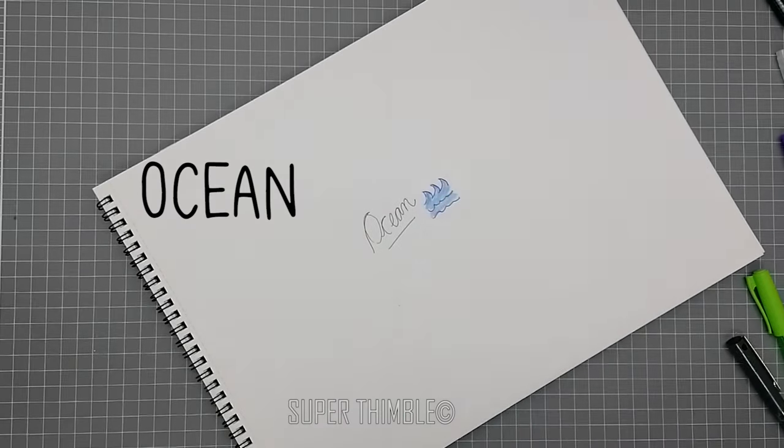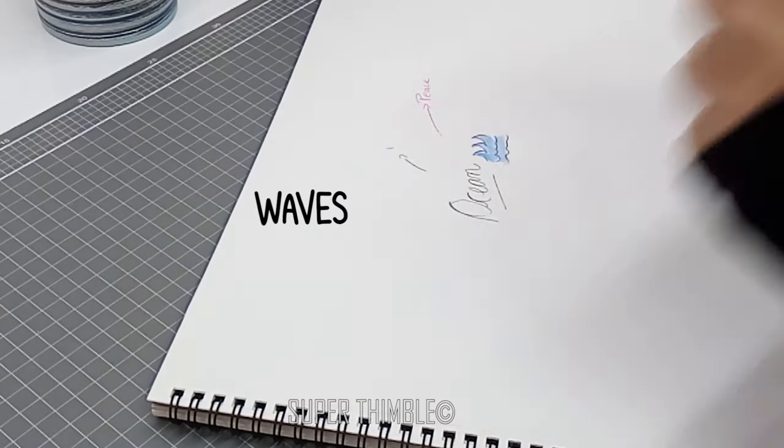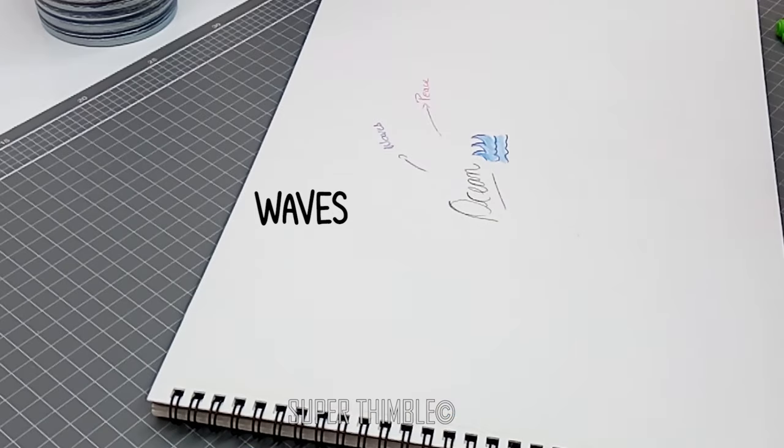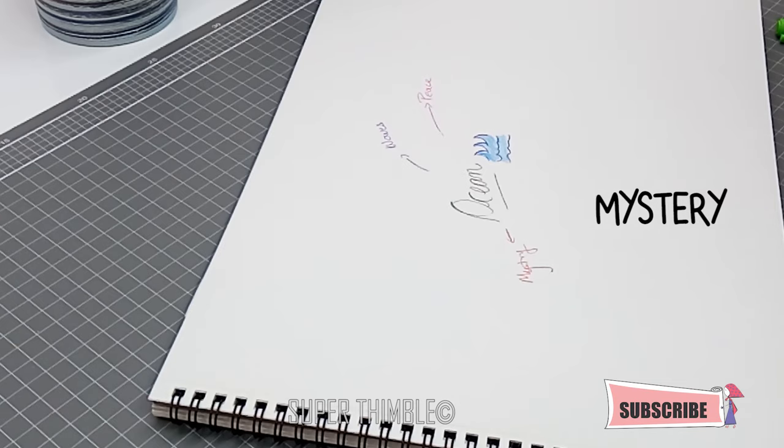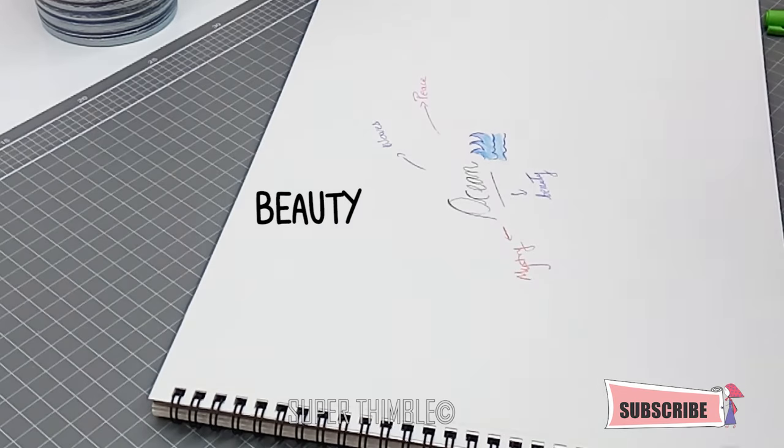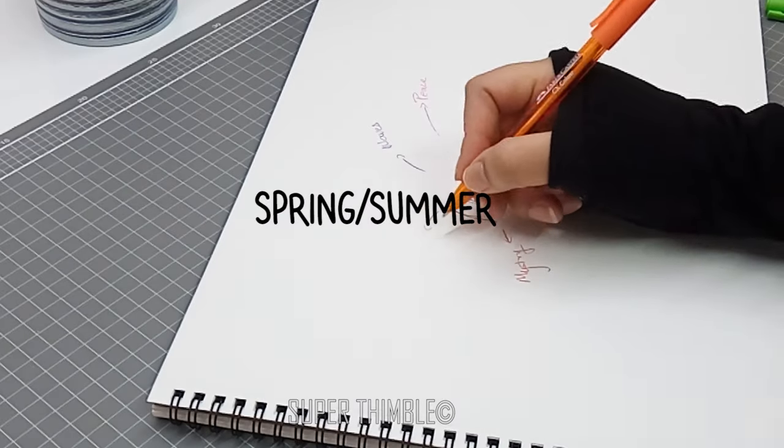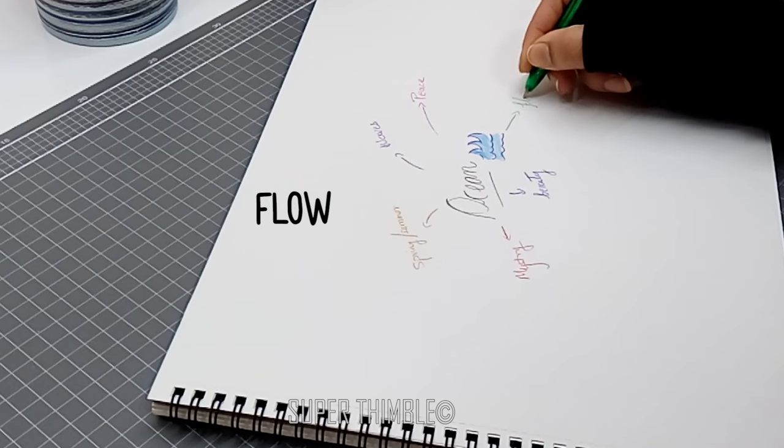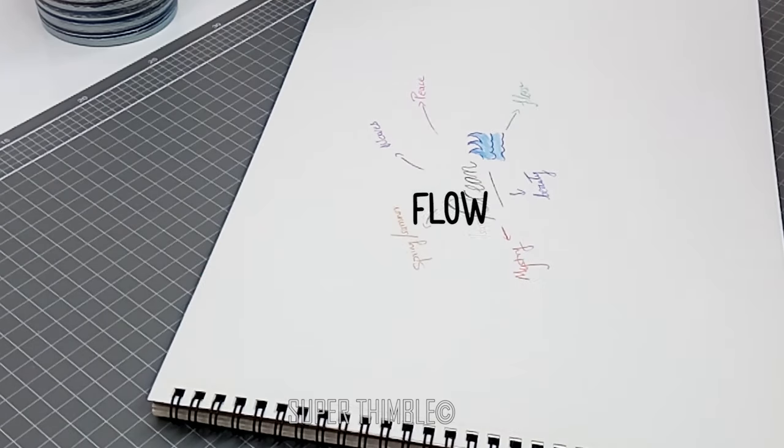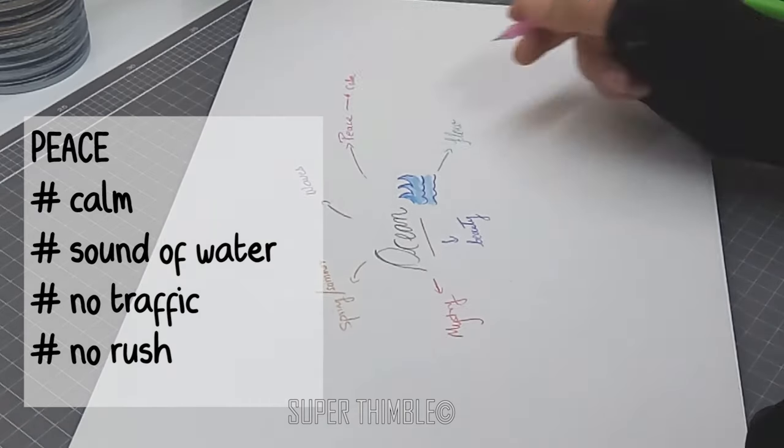Write down the words that are coming in your mind. For me it's peace, then waves, I find it mysterious, don't forget the beauty of nature. I want to make a collection for spring and summer. There's an easy flow with ocean, no restriction. Once I feel I am done with my main ideas, I will further explore the keywords. Example: peace.